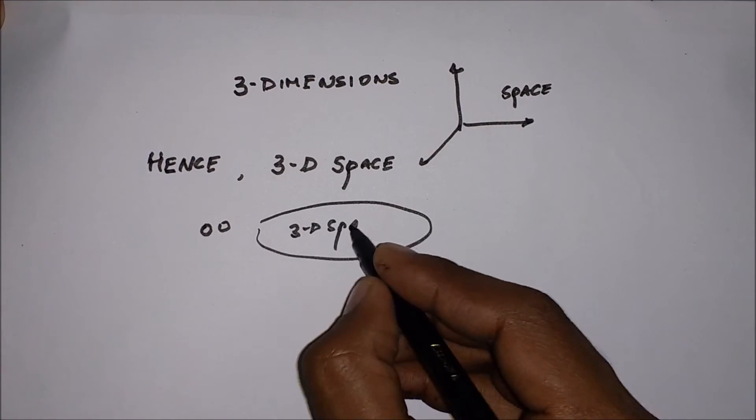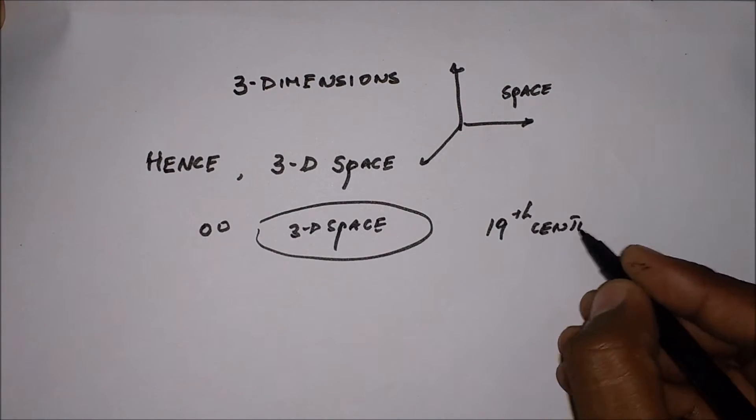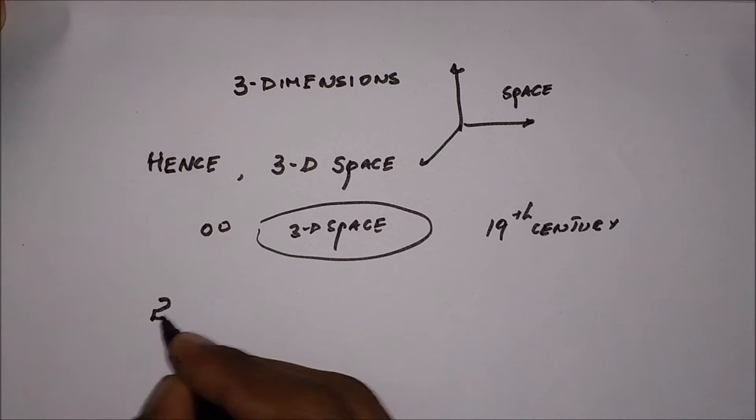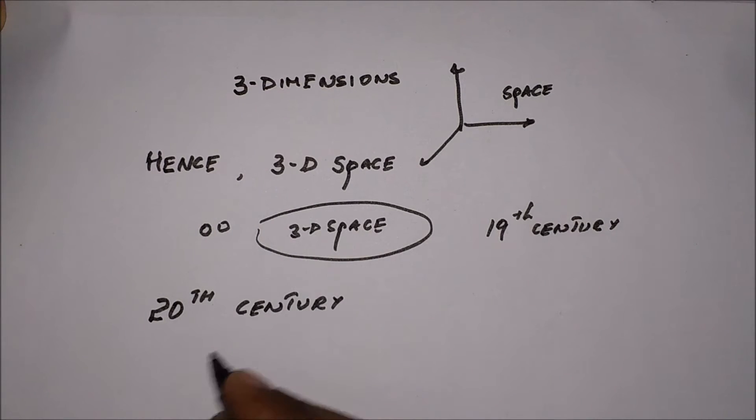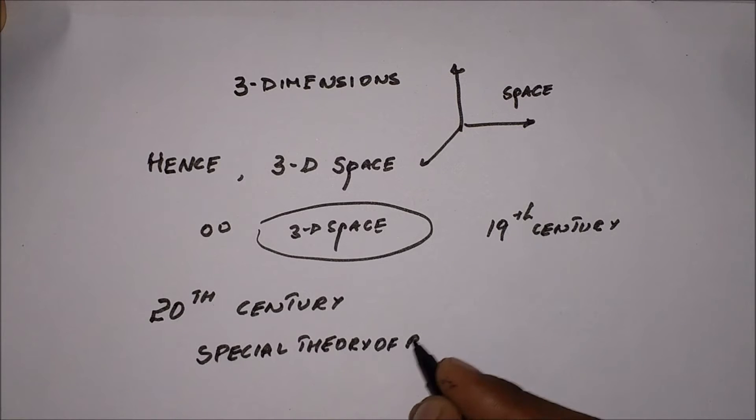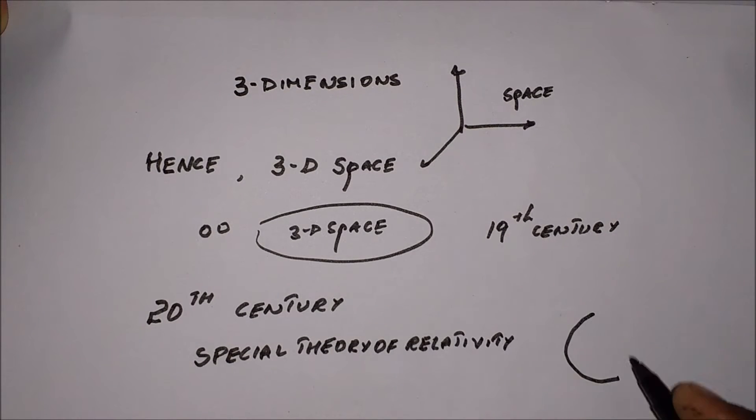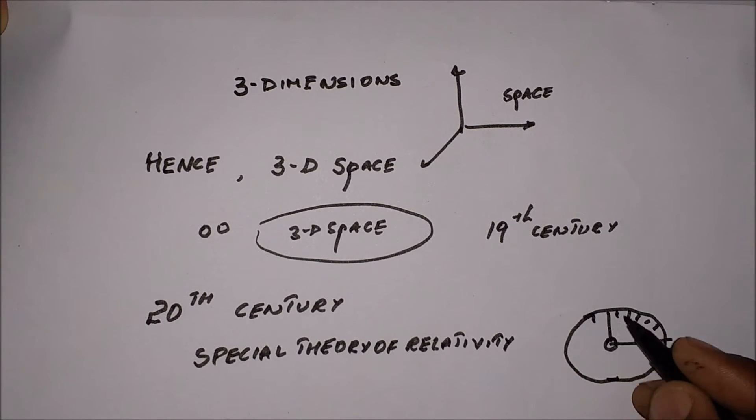This idea of space changed in the 20th century. After several experiments such as the Michelson-Morley experiment and the development of the groundbreaking theory of relativity, our intuition was modeled to perceive that time is a variable.